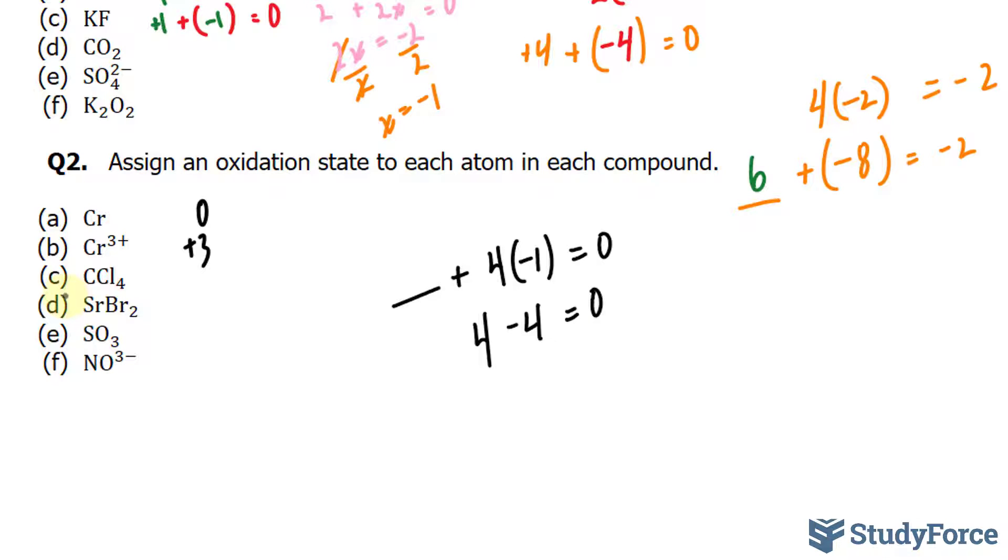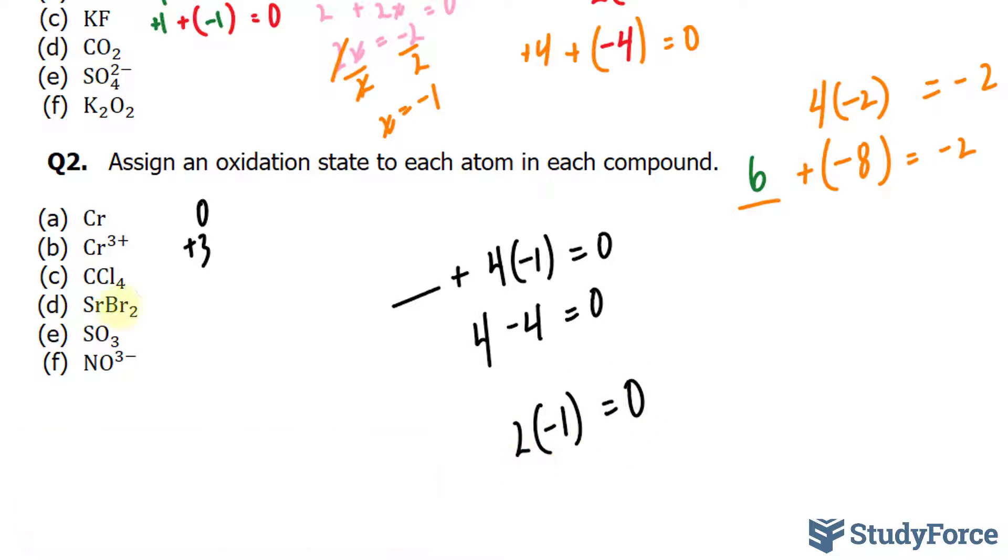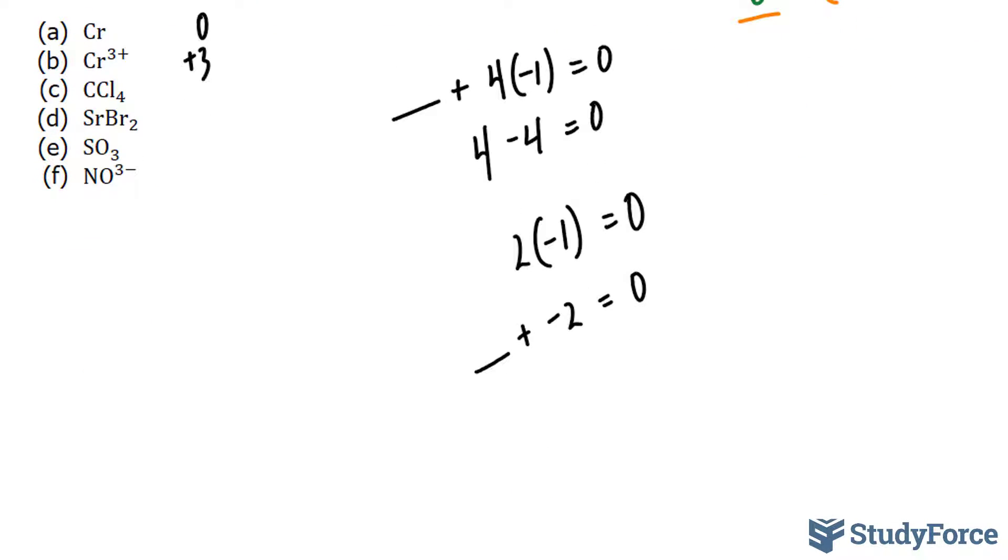In question D, we have SrBr2, which is strontium bromide. Here, bromine has a charge of 1-, and it's neutral, so it's going to equal 0. I'll multiply this by 2 since there are 2 of them. We have minus 2 is equal to 0, and strontium has a charge. Therefore, if we deduce this much like the way we did for question C, we'll end up with positive 2.